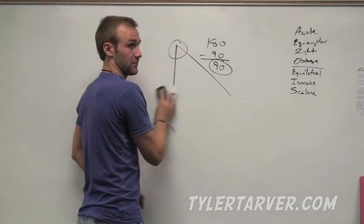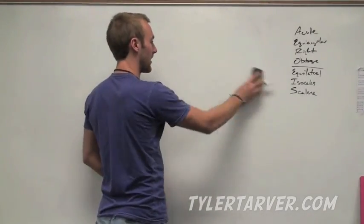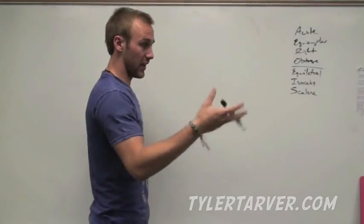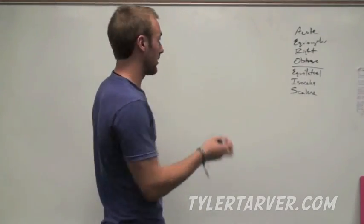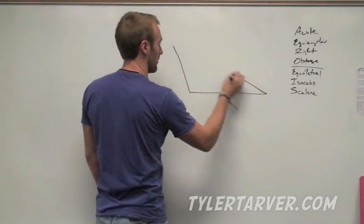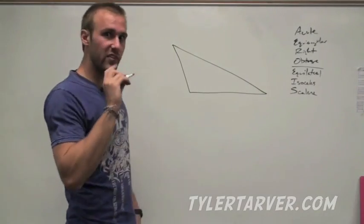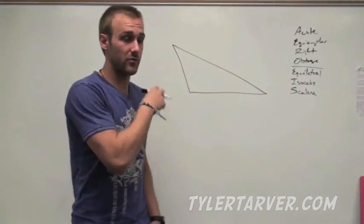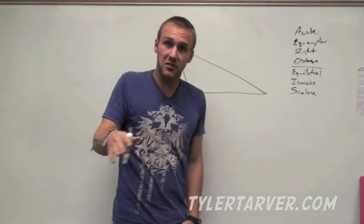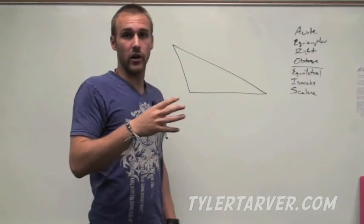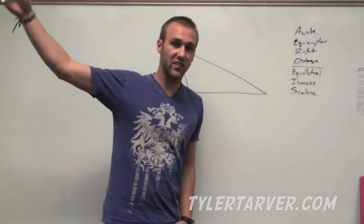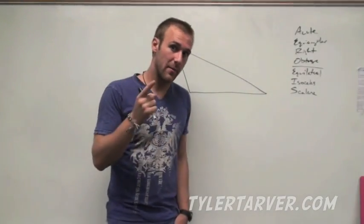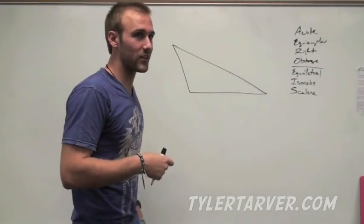The last triangle type that has to deal with angle measures is obtuse. That means that one of the angles is greater than 90 degrees. It doesn't matter if it's 90.001 degrees or 179.999 degrees — as long as it's between 90 and 180, that makes it an obtuse angle. Therefore, it's an obtuse triangle.